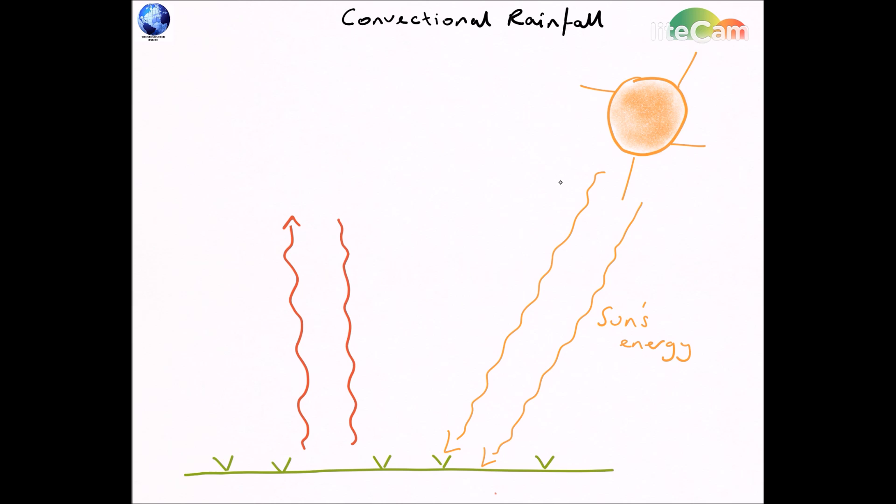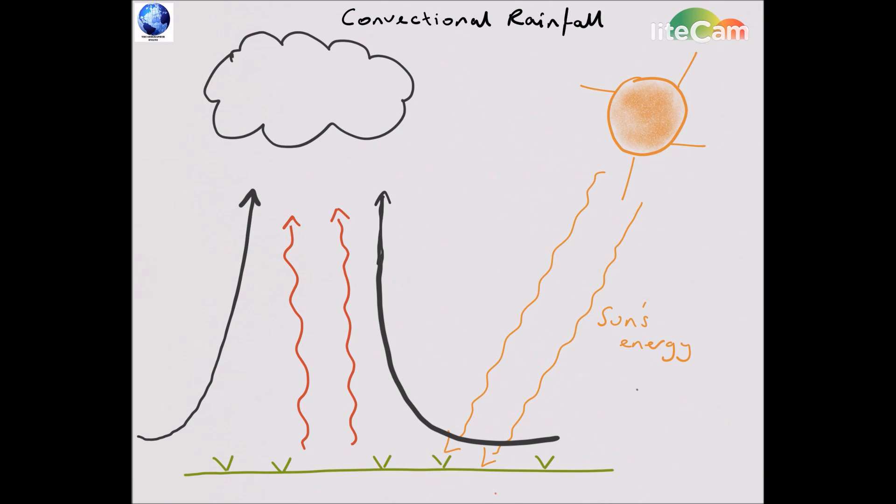When the sun's energy shines down from space and it comes into contact with the ground or vegetation, it causes water to change from its liquid form into its gaseous form.